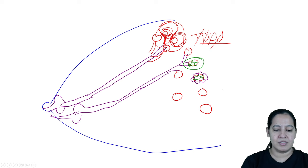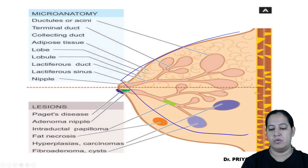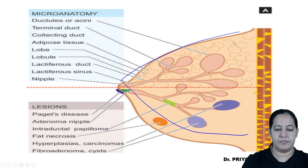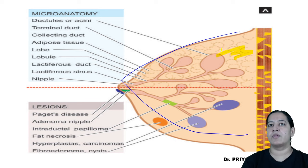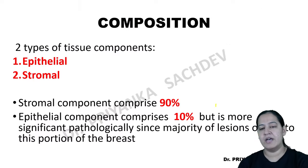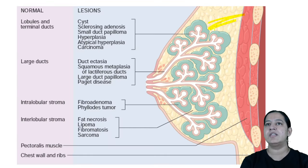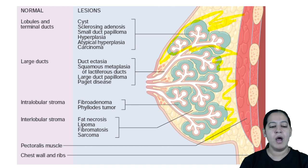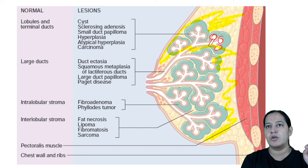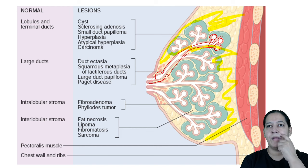Look at the background — it is known as stroma. So the breast has two components: epithelial component and stromal component. You can see the yellow-colored stroma in this diagram — it is basically fat. The background is stroma. Apart from stroma, you can see the ductules. Multiple ductules opening into terminal ducts, terminal ducts opening into lactiferous ducts, lactiferous sinus opening into the nipple.